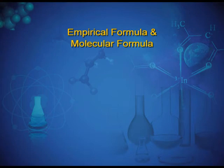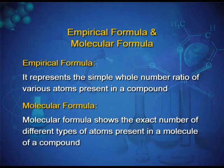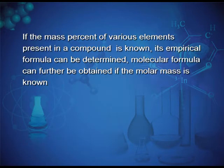Empirical formula represents the simplest whole number ratio of various atoms present in a compound. Molecular formula shows the exact number of different types of atoms present in a molecule. If mass percentages of elements are known, the empirical formula can be determined; the molecular formula can further be obtained if the molar mass is known.